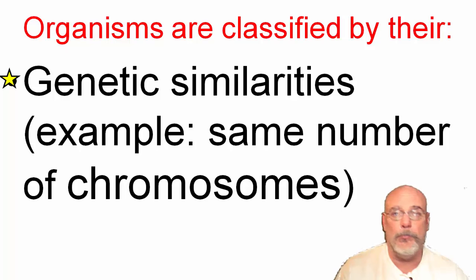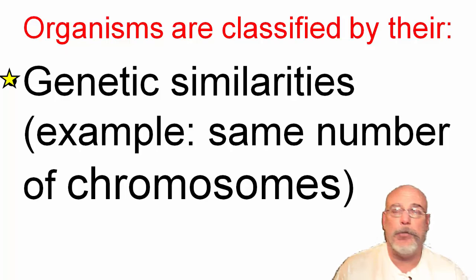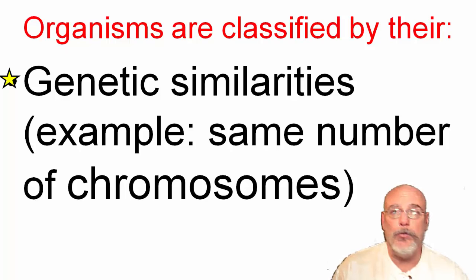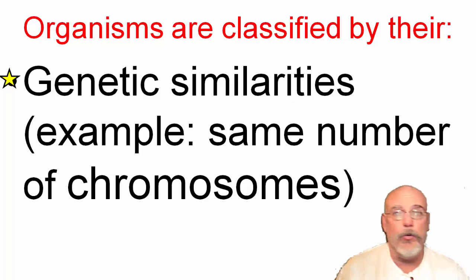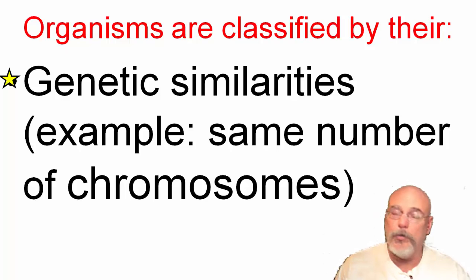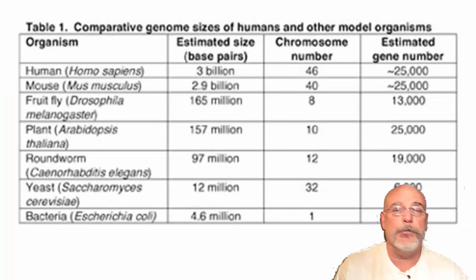Another way organisms are classified is by genetic similarities — for example, they might have the same number of chromosomes. You'll learn a lot more about chromosomes in eighth grade, but think of it as the genetic code: the instructions that your cells have to make new cells. Your genes and chromosomes tell you things like whether you'll have blue eyes or brown eyes, blonde hair or red hair.